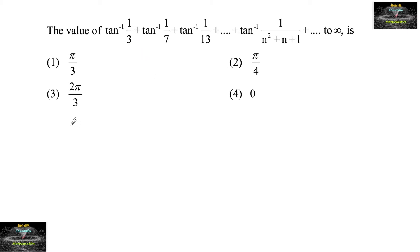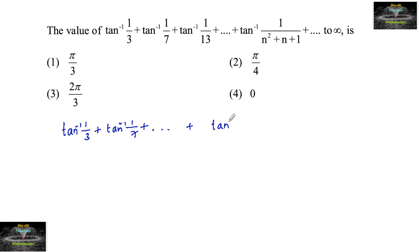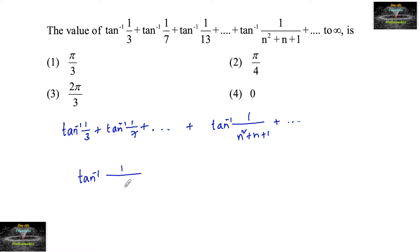The value of tan inverse of 1/3 plus tan inverse of 1/7 plus and so on to its nth term is given as tan inverse of (n² + 1)/(n² + n + 1), and so on to infinity. Let's consider its nth term: tan inverse of 1/(n² + n + 1).